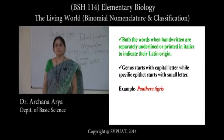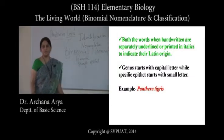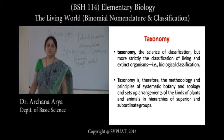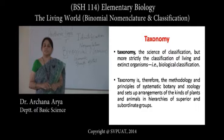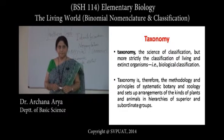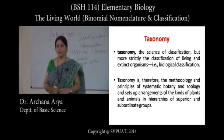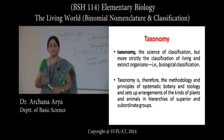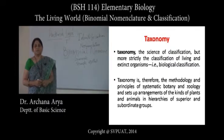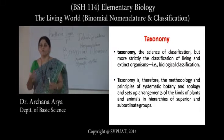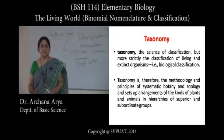After binomial nomenclature, I told you about taxonomy — the branch of biology related to classifying and naming organisms. Each category of this taxonomy represents a taxon. All these categories together form the taxonomic hierarchy. A step-by-step increasing or decreasing order process is called a hierarchy. So taxonomic hierarchy means all the categories and groups of different taxons together in a decreasing or increasing order.